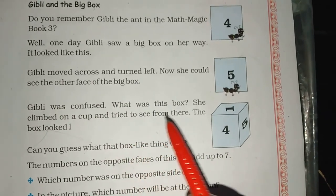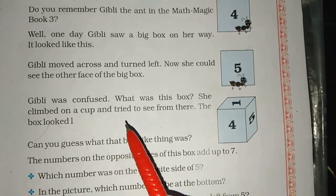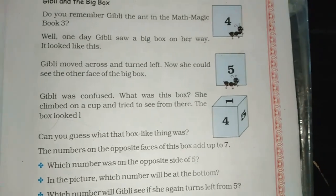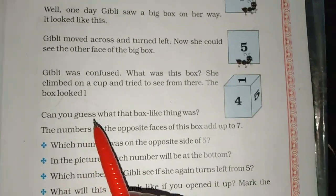Ghibli was confused. What was this box? She climbed on a cup and tried to see from there. The box looked one. What did she see there? One.